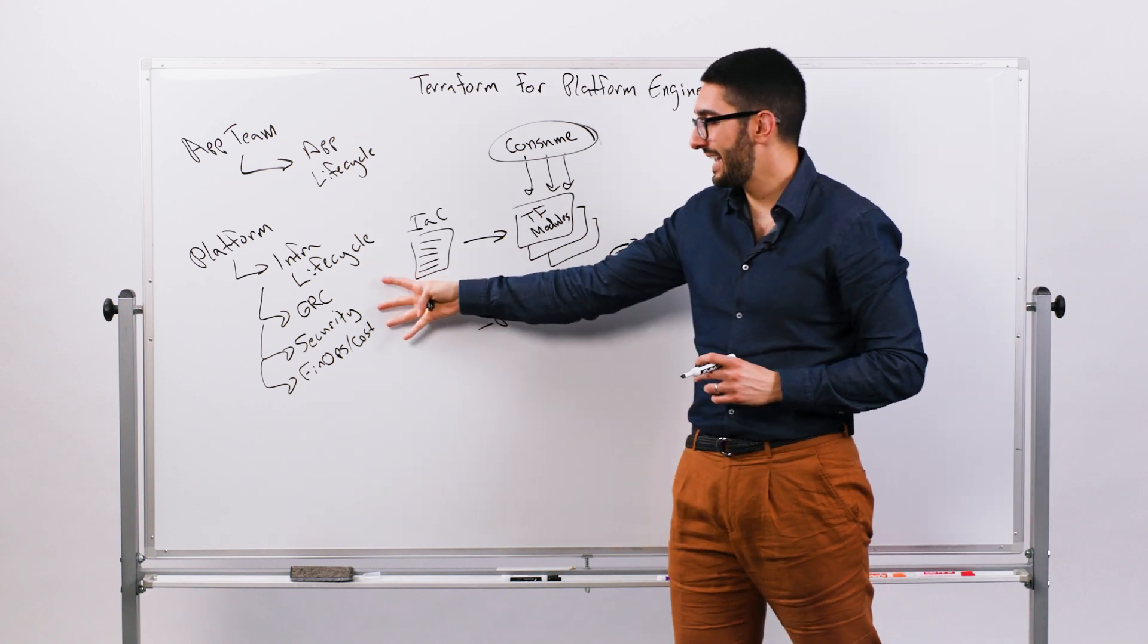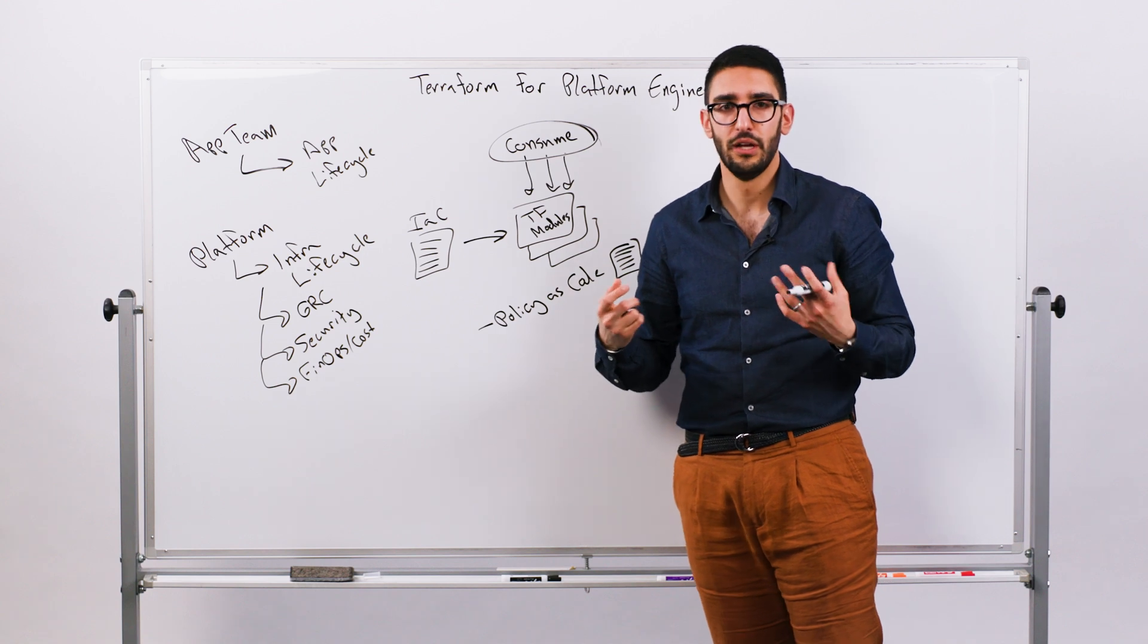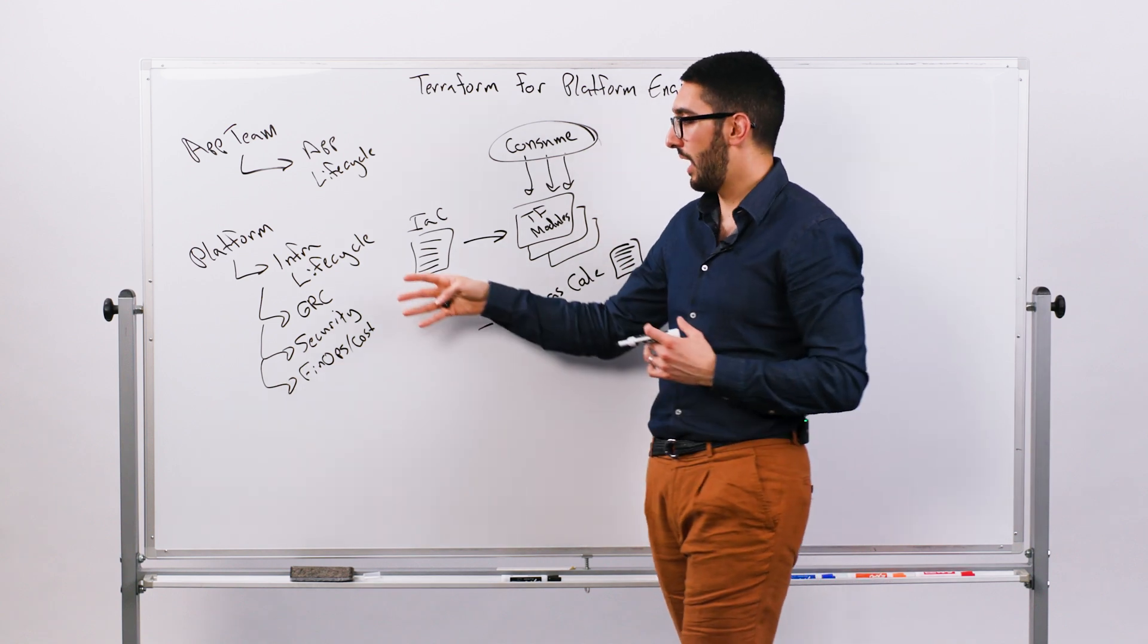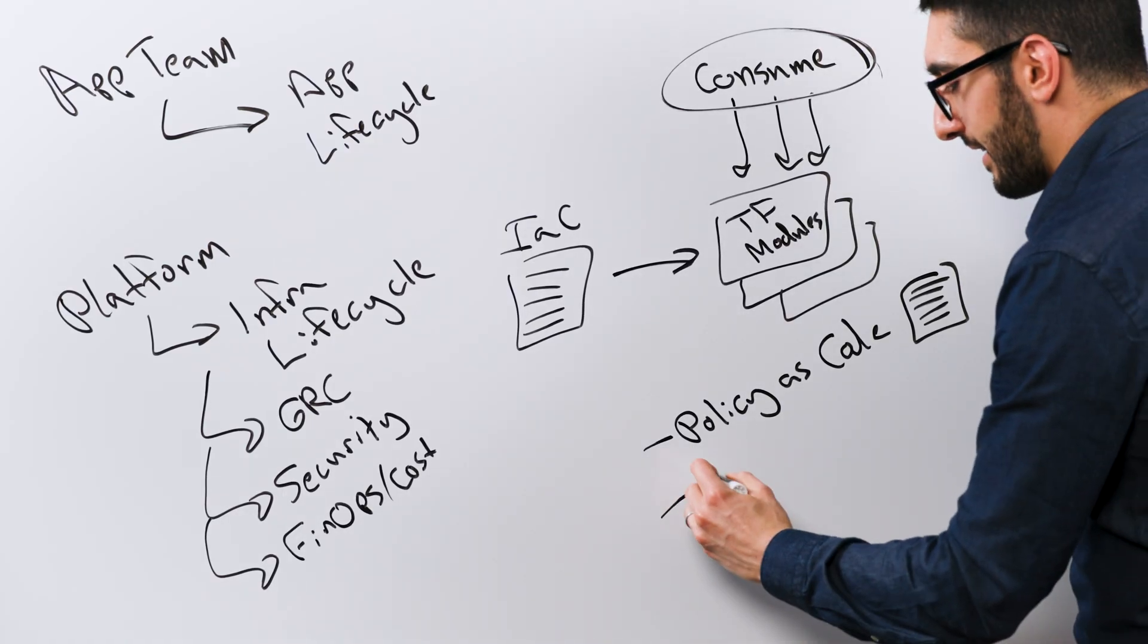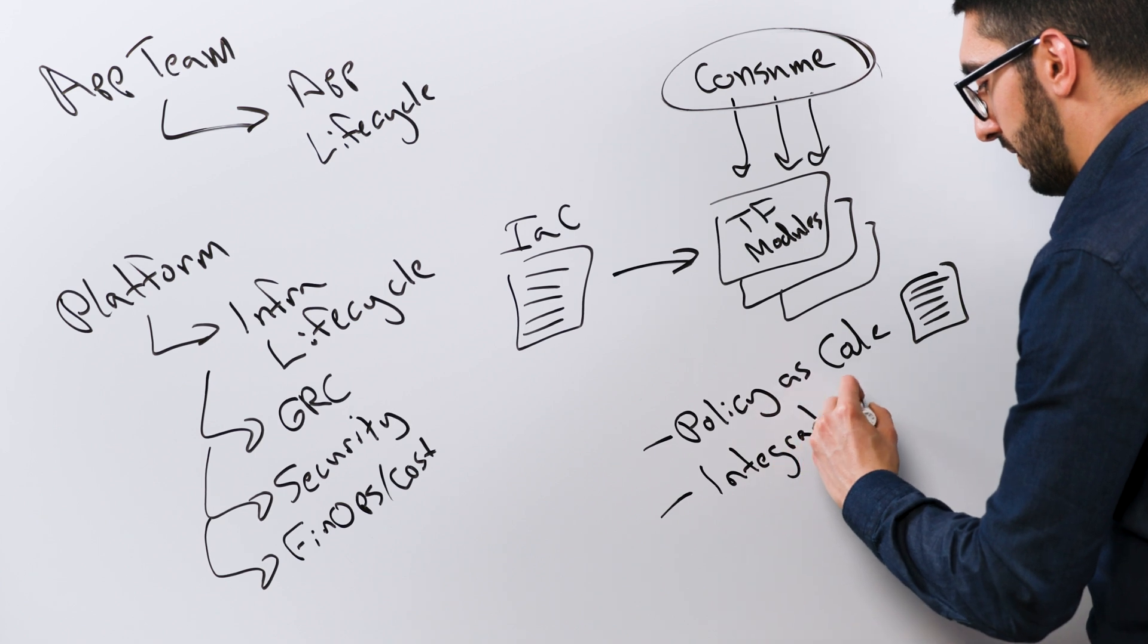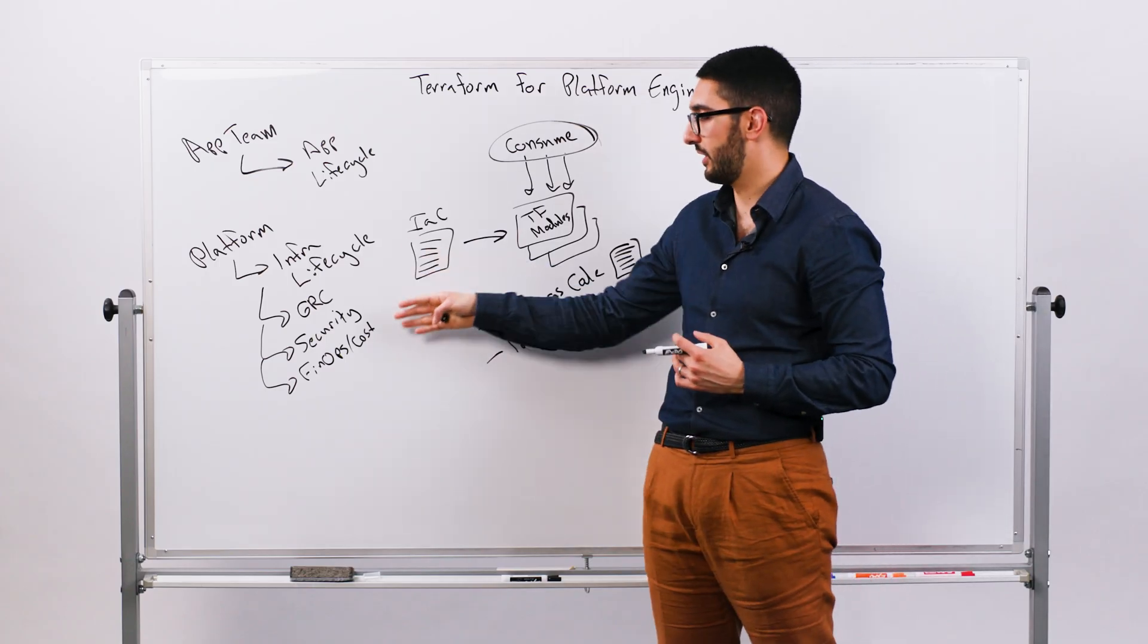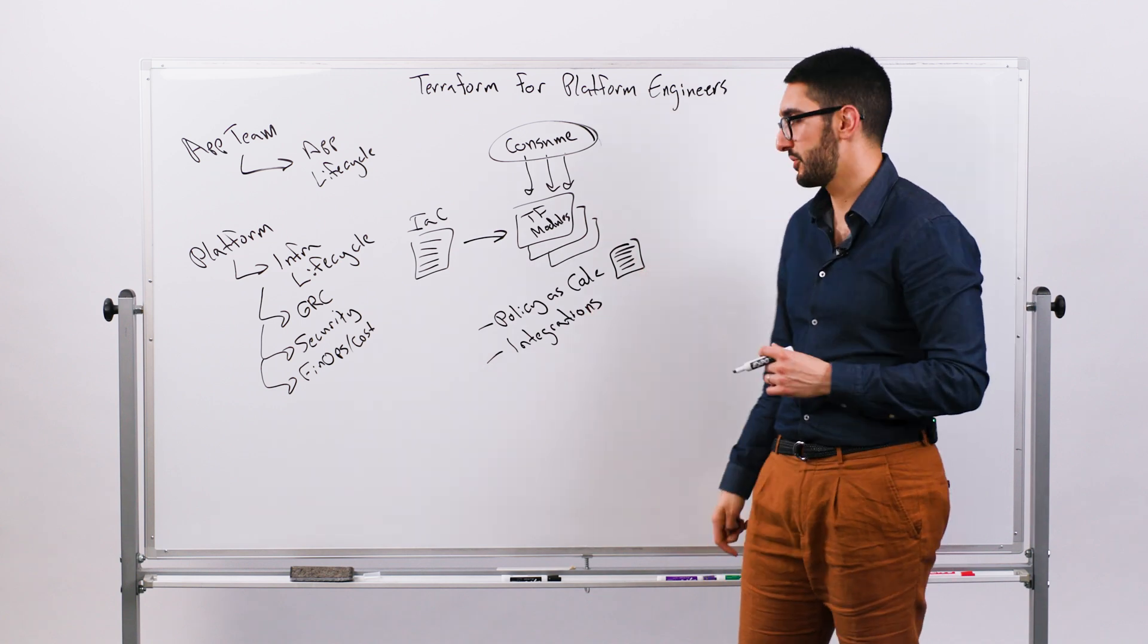Oftentimes, we might be using external tooling for some of this as well. So if we think about, we might be using Palo Alto Prisma Cloud, or we might be using Wiz, or we might be using Turbonomics to do optimization on these things. So then we think about how do we create a set of integration surface area so that we can connect these external tools that are being used for security, or privacy, or cost, or these other things into the workflow that developers are using.